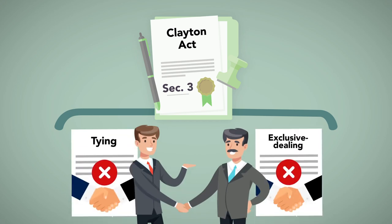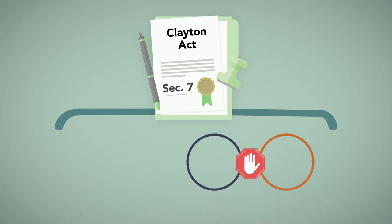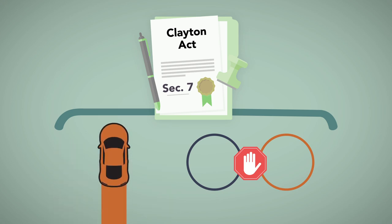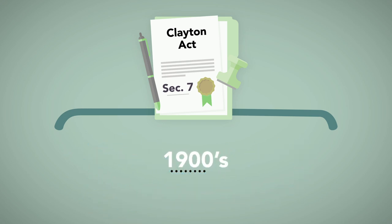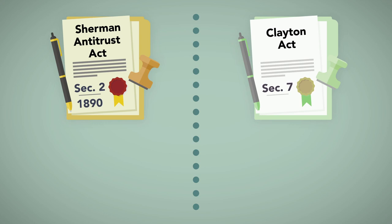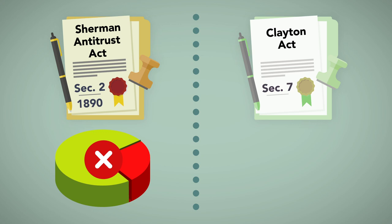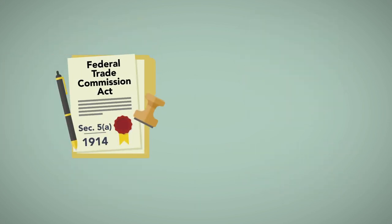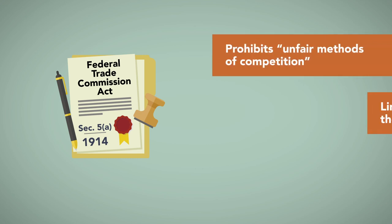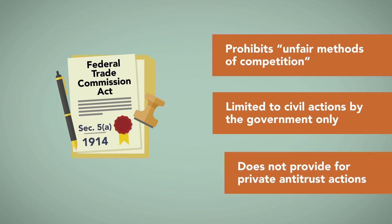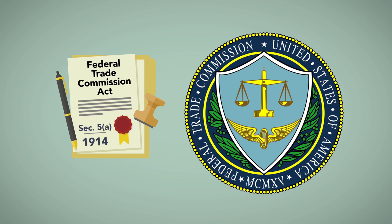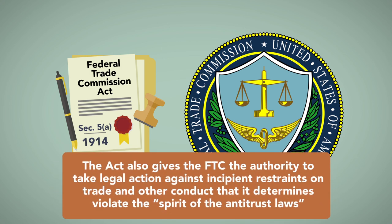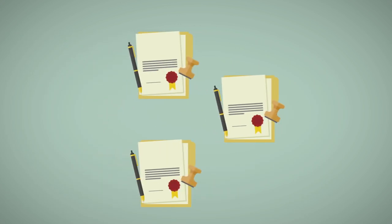Under Section 3 of the Clayton Act, parties are prohibited from entering into certain tying and exclusive dealing arrangements. This statute is civil in nature. Section 7 of the Clayton Act prohibits mergers and all other forms of acquisitions that may substantially lessen competition. The Clayton Act was aimed at addressing a new wave of mergers and acquisitions that began to appear around the early 1900s. The earlier Sherman Act prohibitions were aimed at monopolization and the attempted creation of monopolies. In contrast, a key purpose of the Clayton Act was to close a loophole in the Sherman Act by prohibiting M&A activities aimed at curbing competition. Section 5A of the Federal Trade Commission Act of 1914 prohibits unfair methods of competition. The act is limited to civil actions by the government only, as it does not provide for private antitrust actions. The act created the Federal Trade Commission and gives the FTC the authority to take legal action against incipient restraints on trade and other conduct that it determines violates the spirit of antitrust laws. A host of other federal and state statutes may come into play in the M&A context.